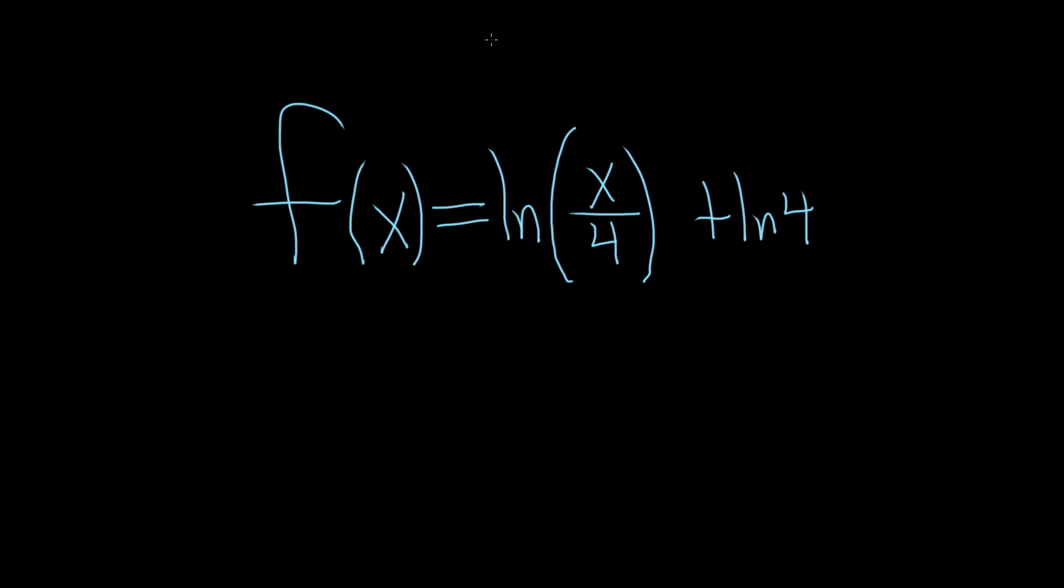So the rule we're going to use here is called the quotient rule. It says whenever you have the natural log of a fraction, so like a over b, it turns into subtraction. So this is the natural log of a minus the natural log of b. The fraction turns into subtraction. So we can use that here in this problem.